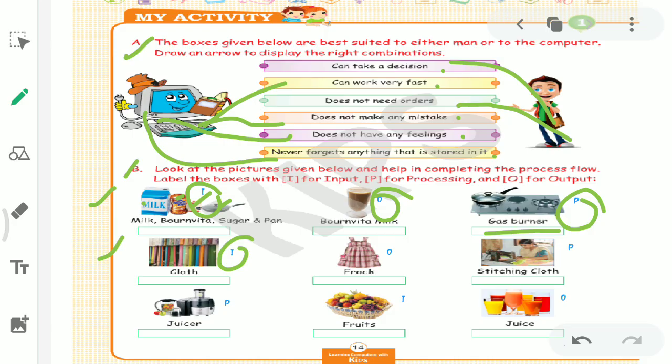Move to next example: cloth, thread, needle - these are input. Which process is stitching - stitching the clothes, something is being made - that is processing. Last, what is made? Frock. So this will be our output.